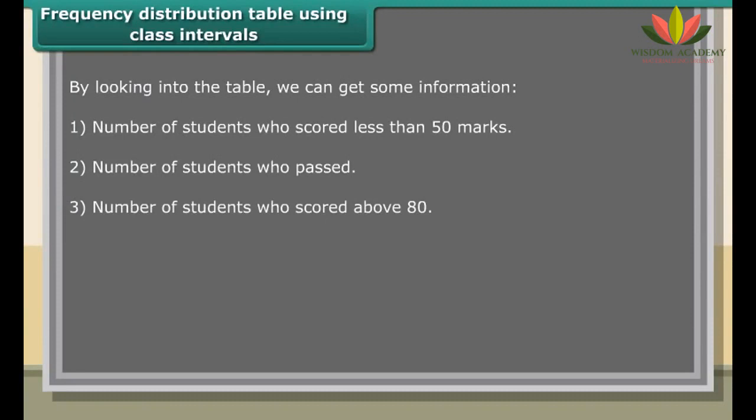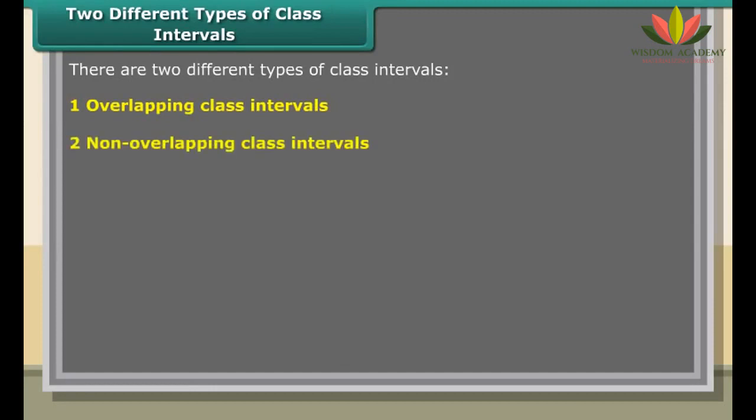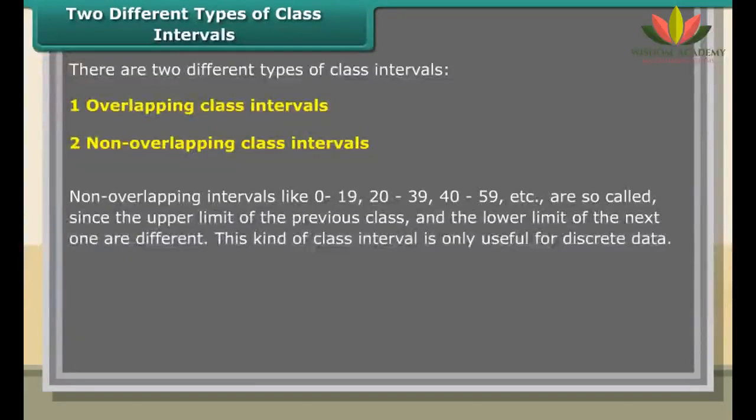For example, consider the interval: Lower limit of the interval is equal to 20. Upper limit of the interval is 40. Width of the interval is equal to 40 minus 20 which equals 20. Class mark is equal to 20 plus 40 upon 2 which is equal to 60 upon 2 which equals 30.